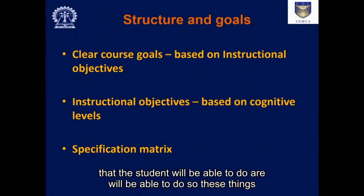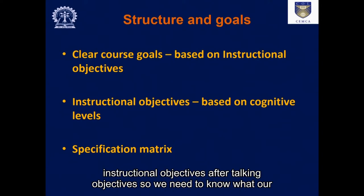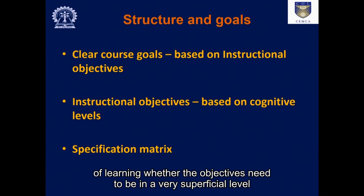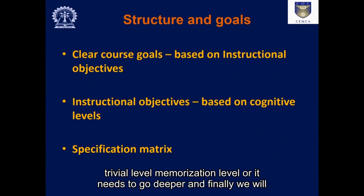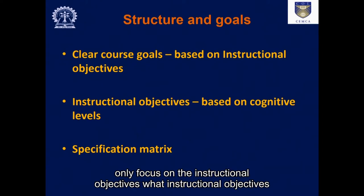The things that the student will be able to do are usually expressed in statements called instructional objectives. We need to know what instructional objectives are. After talking about instructional objectives, we will relate them to cognitive levels — the levels of learning, whether the objectives need to be at a superficial, trivial, or memorization level, or whether they need to go deeper. Finally, we will talk about the specification matrix. In this particular lecture, I am going to focus only on instructional objectives: what they are and how they are formed.